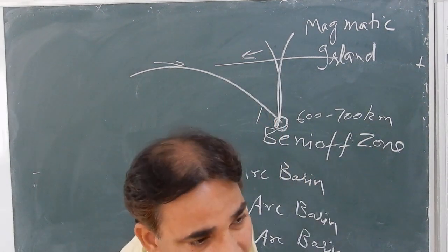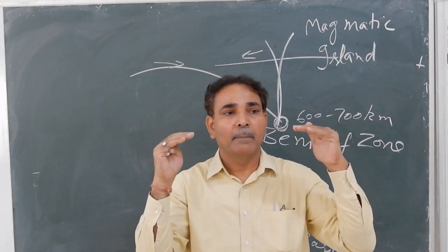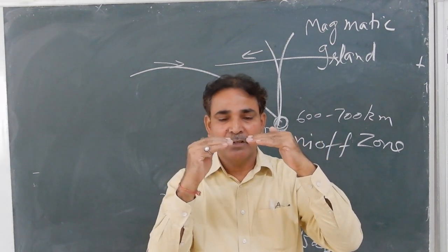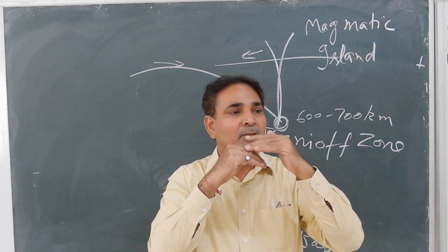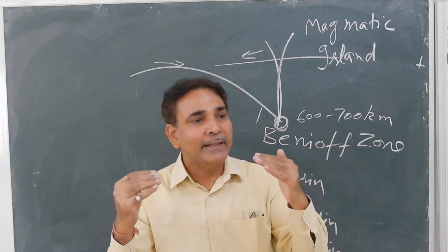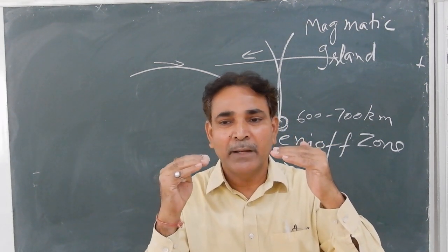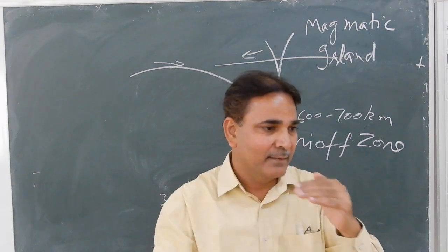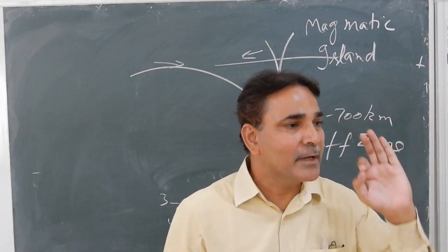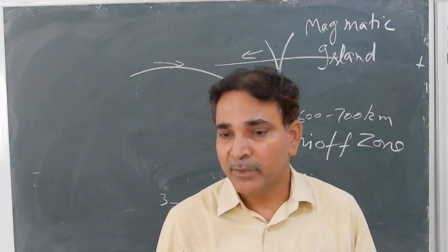There are two situations at a destructive plate boundary: number one when the plate is subducting, and number two when the plates are colliding. Here I am going to discuss the sedimentary basins found during convergent plate movement related with destructive plate boundaries when one plate is subducting.